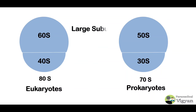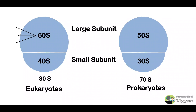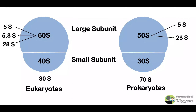The 60S large subunit of eukaryotes contains three RNA units: 28S, 5.8S, and 5S. The prokaryote 50S large subunit contains two RNA units: 23S and 5S. The eukaryote 40S small subunit contains 18S RNA. The prokaryote 30S small subunit contains 16S RNA.